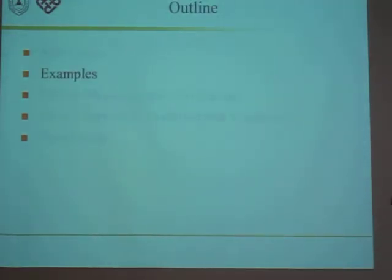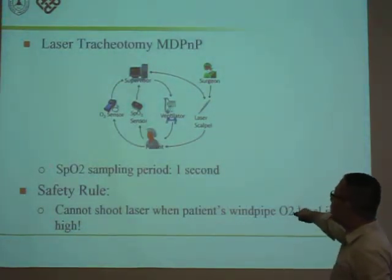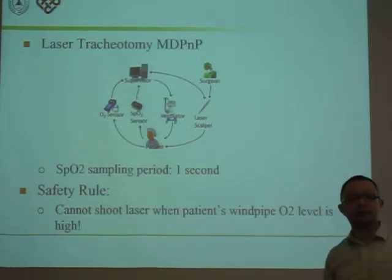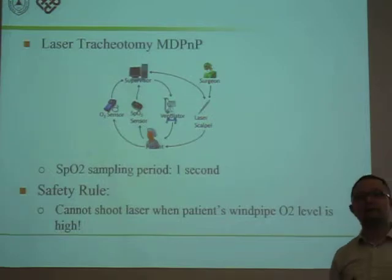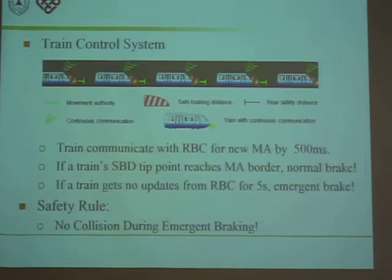The first example is laser tracheotomy, medical device plug-and-play. In this scenario, a surgeon tries to cut open the windpipe of the patient using a laser scalpel. However, if the windpipe of the patient is filled with high concentration of oxygen, then shooting a laser on it may trigger fire on the patient. Therefore, the safety rule says we cannot shoot a laser when the patient's windpipe oxygen level is too high.